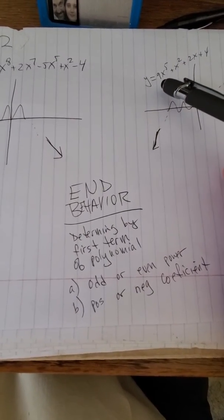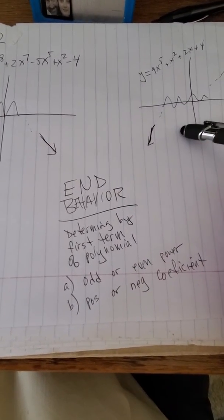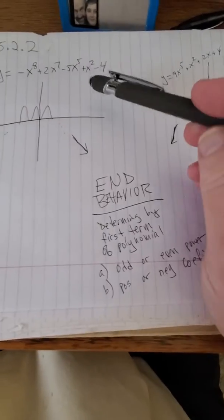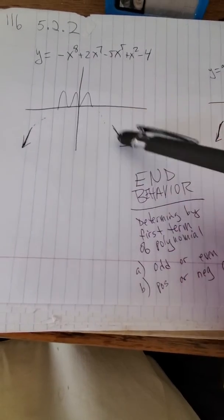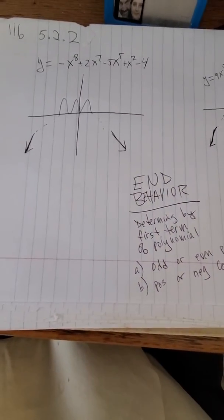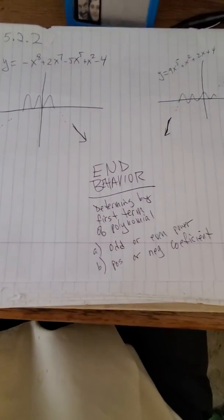So that's an odd power with a positive coefficient. It looks like this, just like we had on the previous video. And that's an even power with a negative coefficient, so it's going to look like that, similar to what we had on the first video. And that's end behavior.